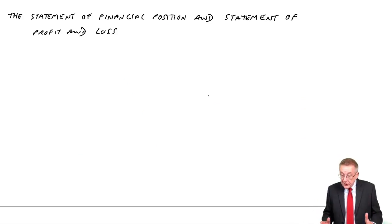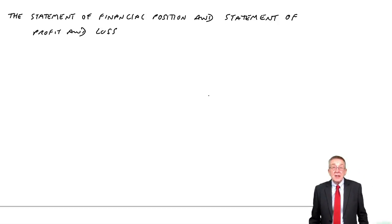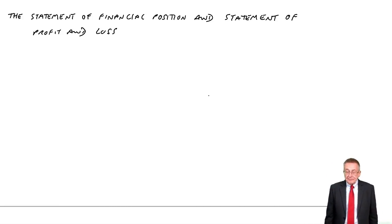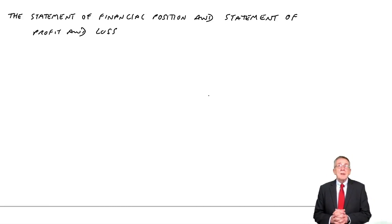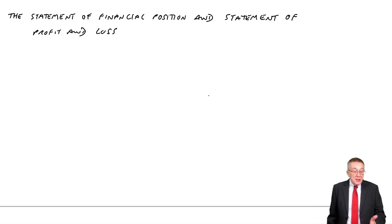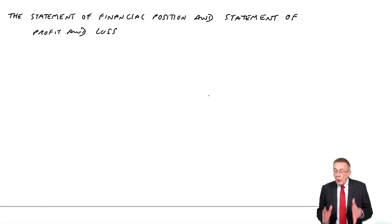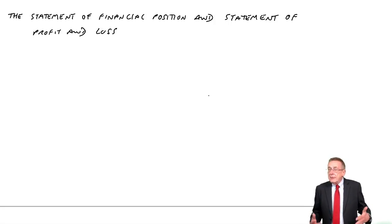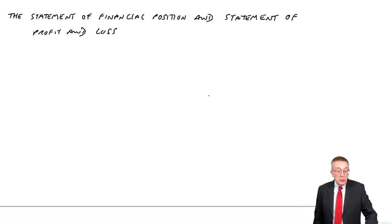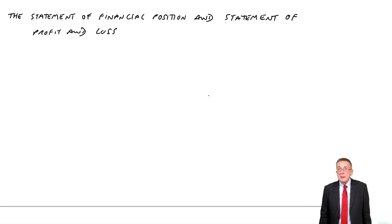Now this chapter covers the statement of financial position and the statement of profit or loss. As I mentioned in the previous introductory lecture several times, our ultimate objective at the end of each period is to produce these two statements. I'm going to use this chapter mainly to explain what these two statements are showing and what they look like. It is quite a long chapter, so I will break the lecture into several parts so you don't fall asleep halfway through.